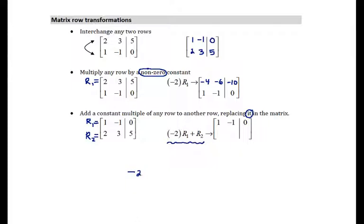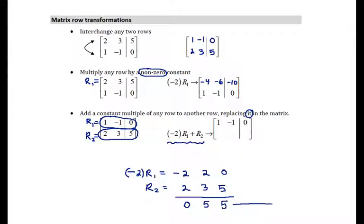First of all, negative 2 times row 1 is equal to, if we're taking this row right here, and multiplying each entry by negative 2, that becomes negative 2, positive 2, and 0 times negative 2 remains 0. Row 2 stays exactly as it is, 2, 3, 5. And then when I add them together, I just add them entry by entry. So negative 2 plus 2 is 0. 2 plus 3 is 5. 0 plus 5 is 5. And I put the result here in my matrix. So all of this was just part of one transformation.